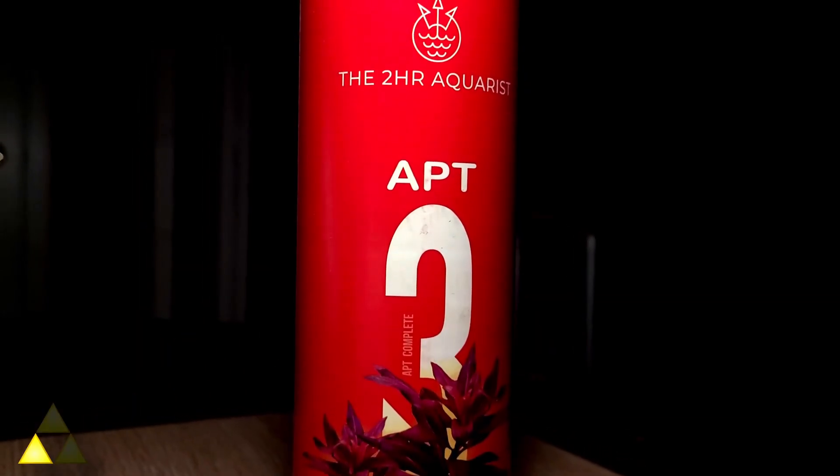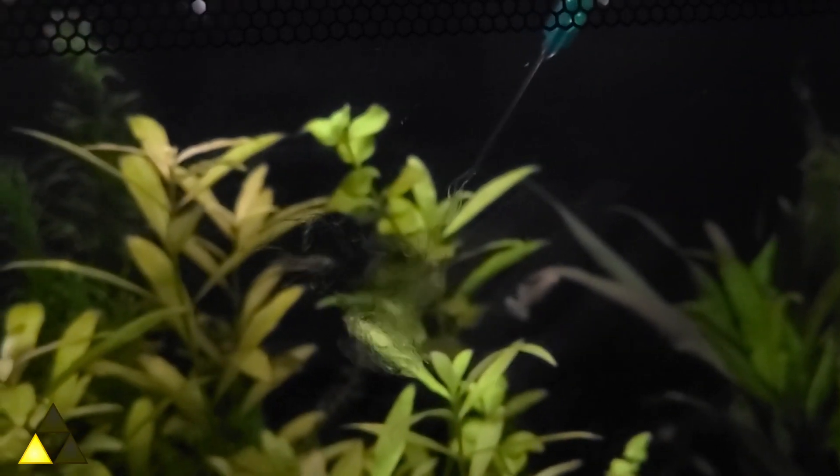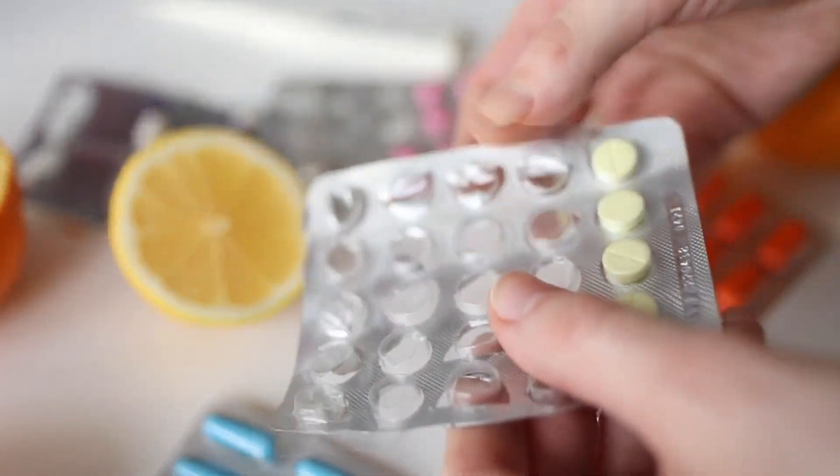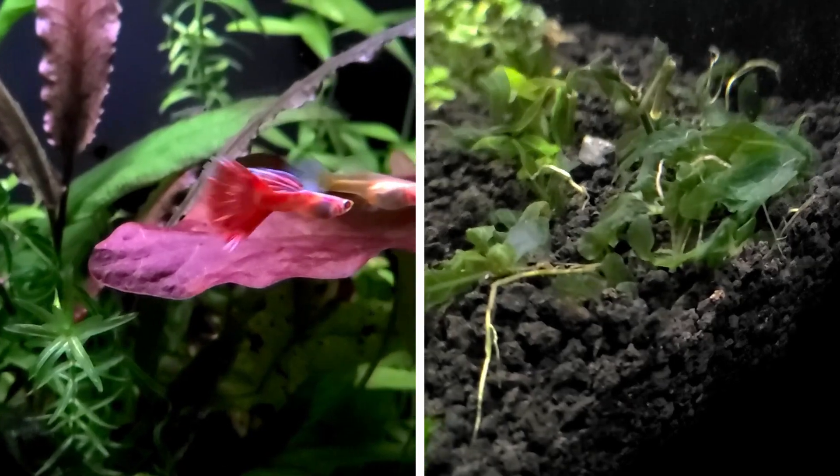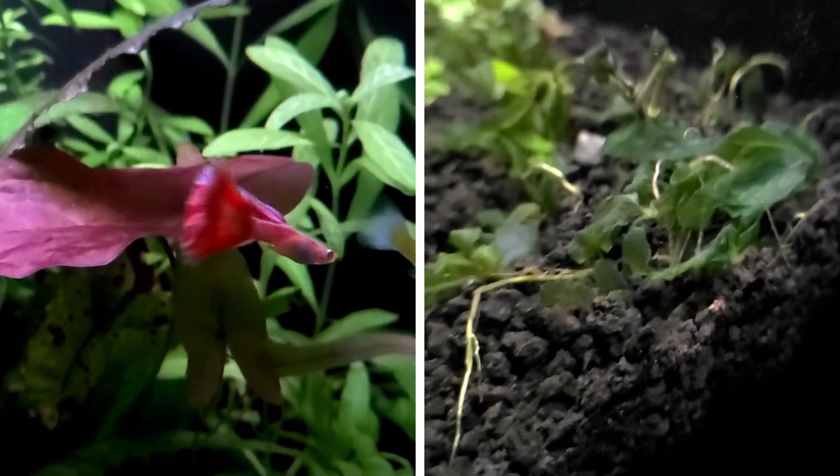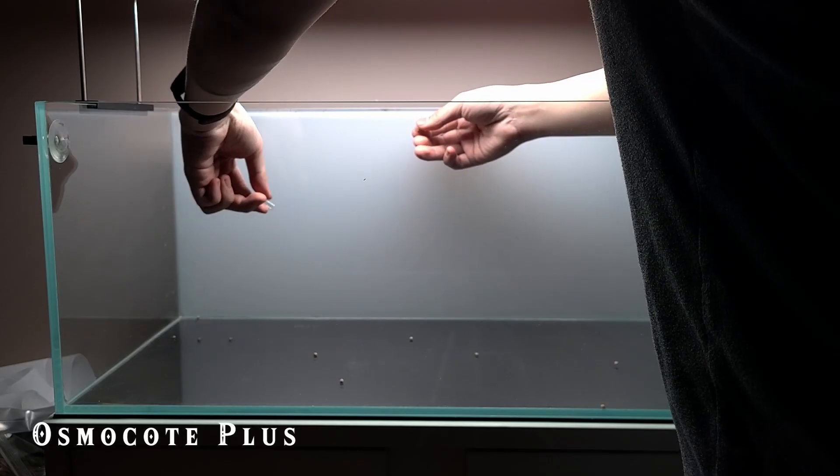Lastly, nutrients. Plants need both macro and micronutrients to flourish, just like how we need our daily vitamins and minerals to keep us healthy. While plants can get their nutrients from fish waste and decaying plant matter, we often need to supplement them to ensure optimal growth.